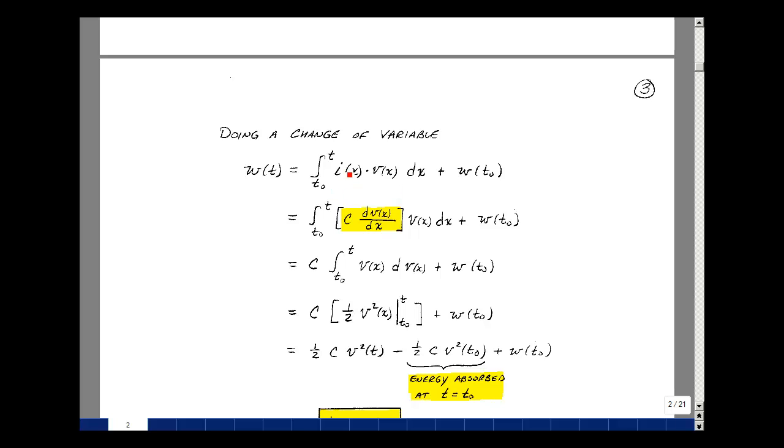Now, what's the relationship between current and voltage for capacitance? It's C dV/dt, but now we've got V of x dx. The dx's cancel. C is a constant. We're going to bring that in front. It's going to be integral from T0 to T of V of x dV of x plus the energy at T0.